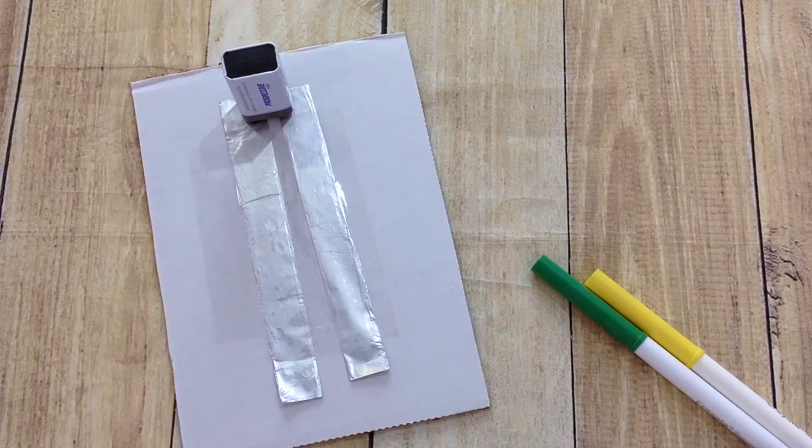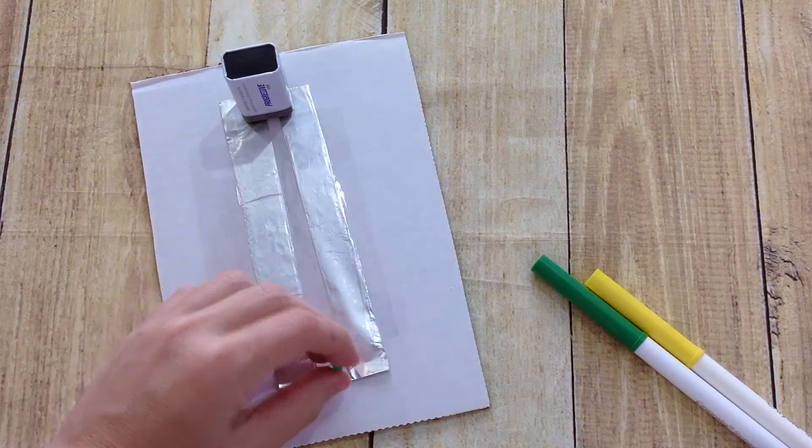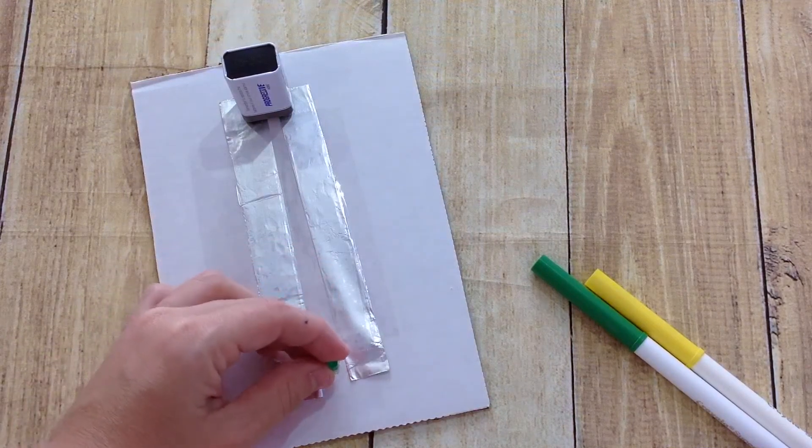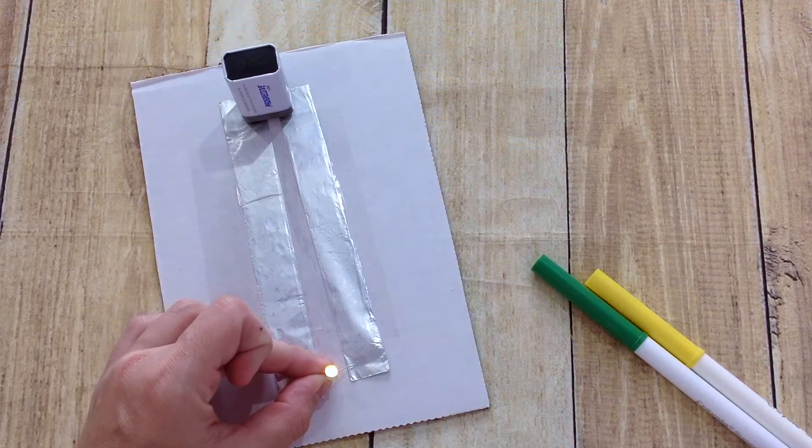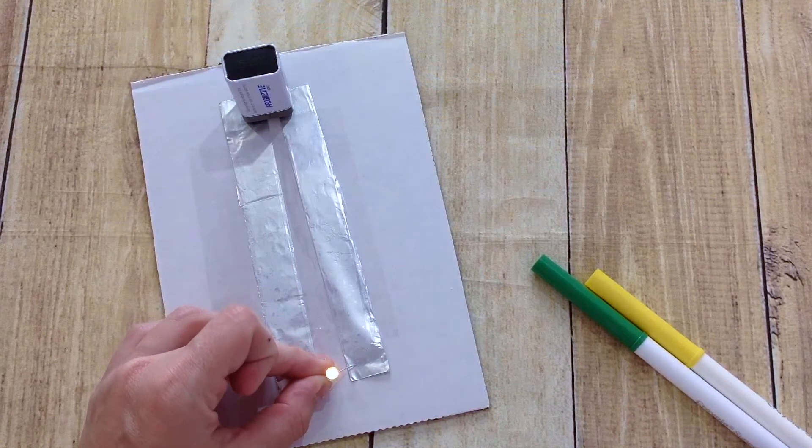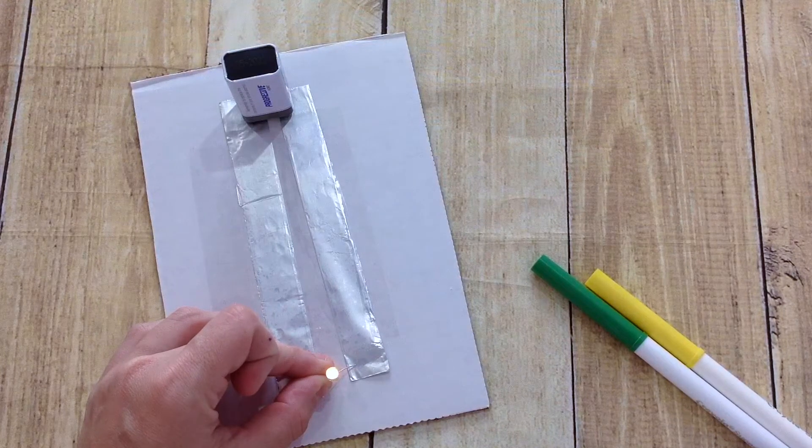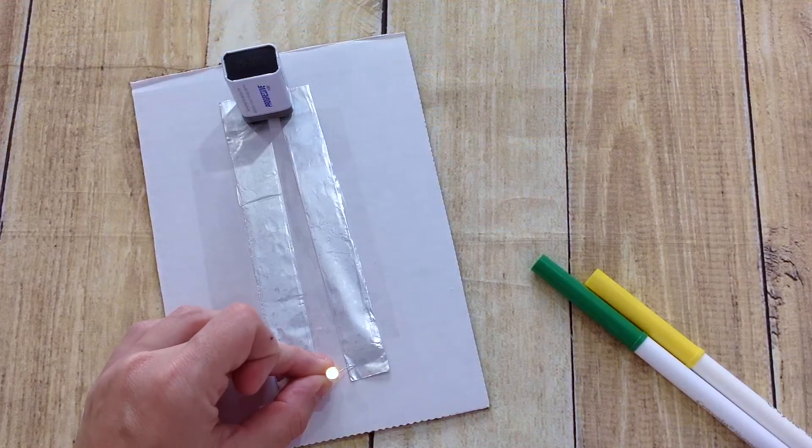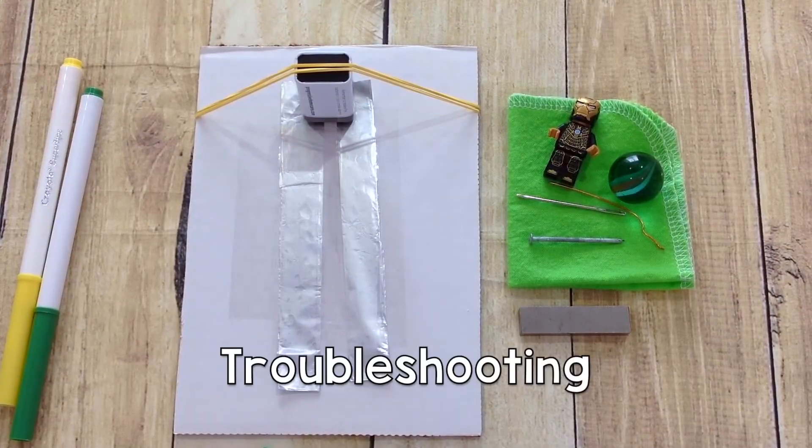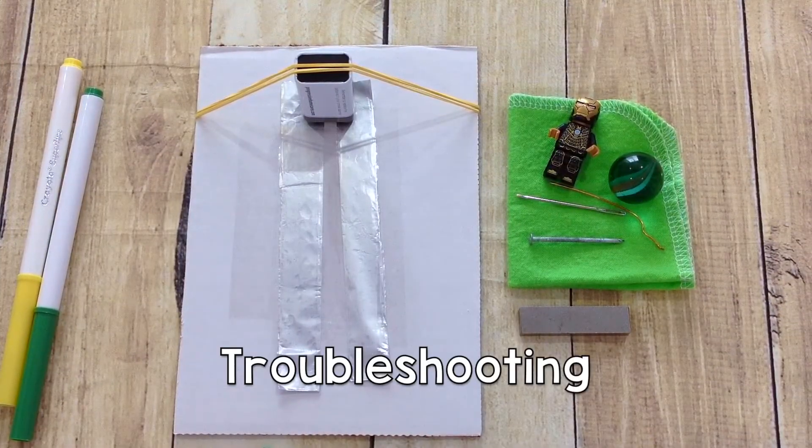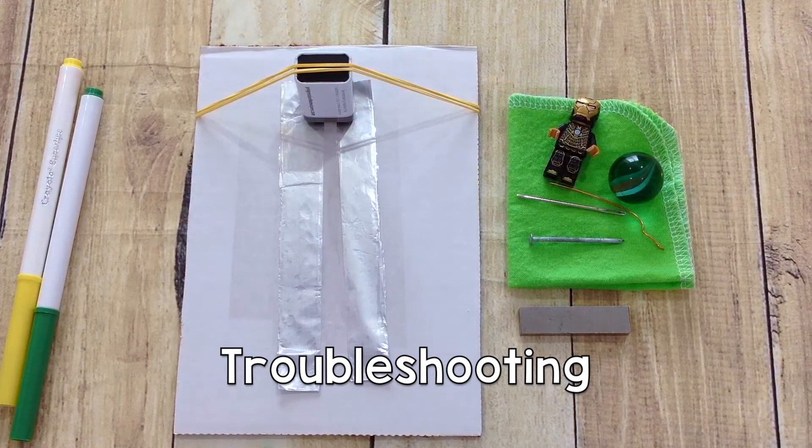Once you have your battery standing, you're going to use your LED at the other end of the circuit. Make sure you have a negative to positive connection, otherwise your light bulb won't light up. You might have to rotate either your battery or your bulb and make some adjustments. If you're having trouble keeping your battery secured, I've found that rubber bands work really well.